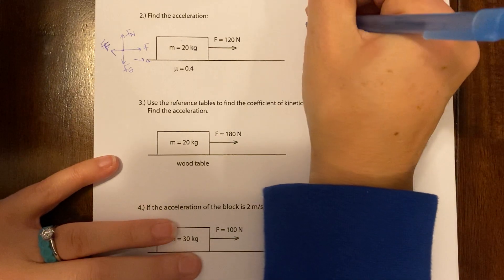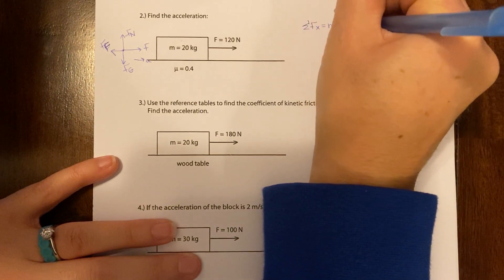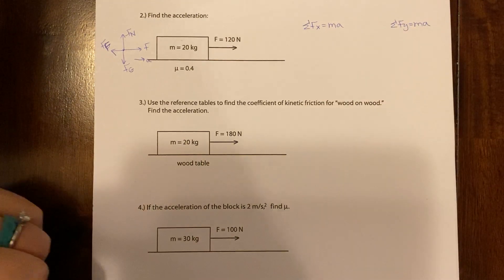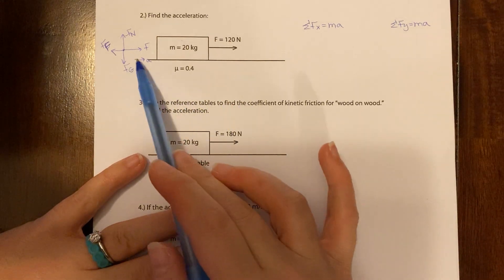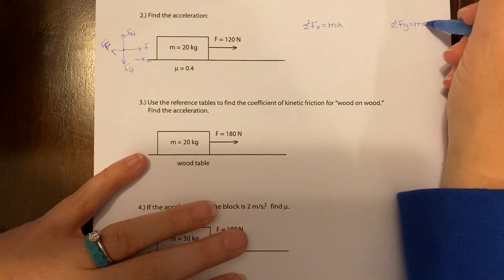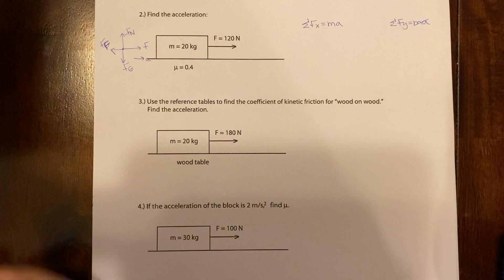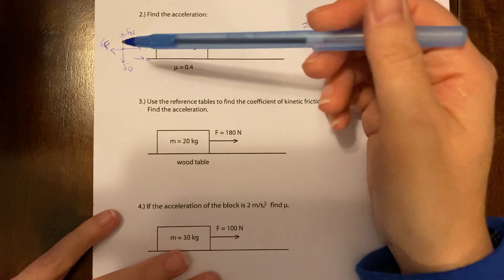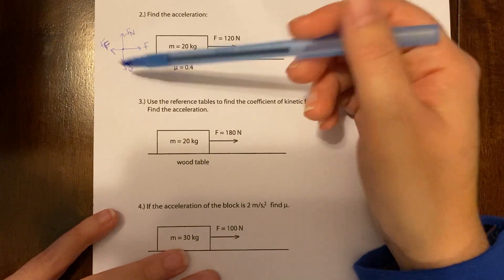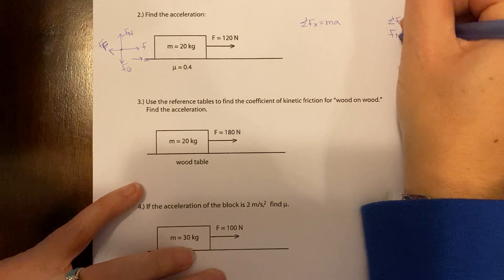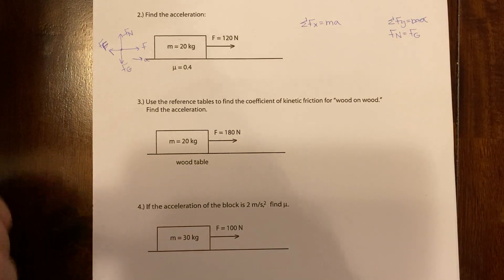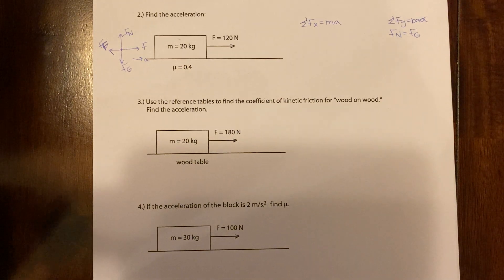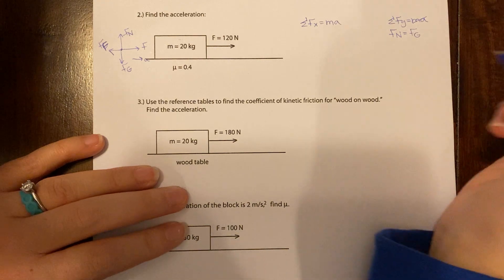All right, so step three says we're going to write out the sum of the forces in the x direction equals ma and the sum of the forces in the y direction equals ma. Okay, so there's only acceleration in the x direction, so no acceleration in the y direction. If there's no acceleration in the y direction, what can we say about the forces? You're right. They're equal or balanced. So I'm going to write out that fn equals fg. fn is going to equal fg for all of these problems today because they're all on a flat horizontal surface. So we can go ahead and write that out for each one.